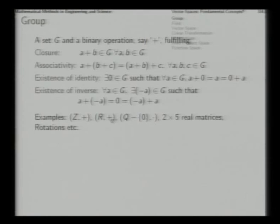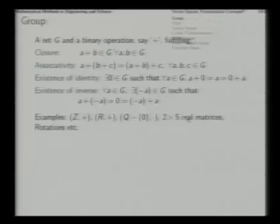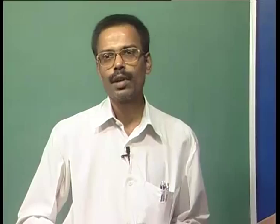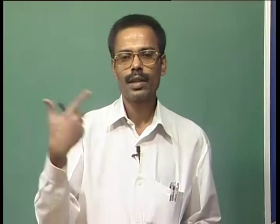Examples of groups include the integers with ordinary addition, the set of real numbers with the same addition, the set of non-zero rational numbers with multiplication, and 2-by-5 real matrices with matrix addition. All these constitute examples of groups. Rotations in geometric space are also an example of a group — if you compose two rotations, the resulting complete movement is again a rotation, and that also fulfills these conditions.